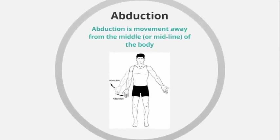Abduction is similar to the phrase 'to abduct' someone — if you abduct someone, you take them away. So abduction is the movement away from the midline of the body. Imagine the person has a dotted line along the middle of their body — abduction is when our limbs move away from that midline. A good example is the outward phase of star jumps, when our arms move away from the midline going upwards, and our legs move away from the midline going outwards.